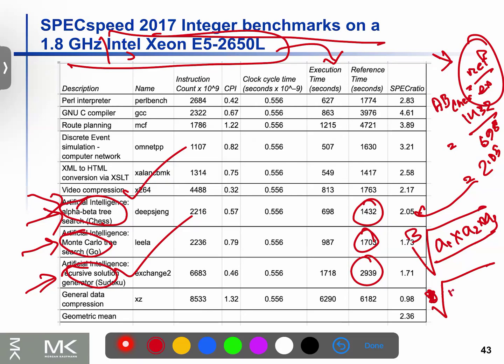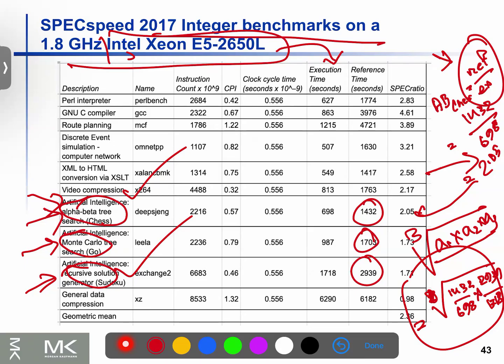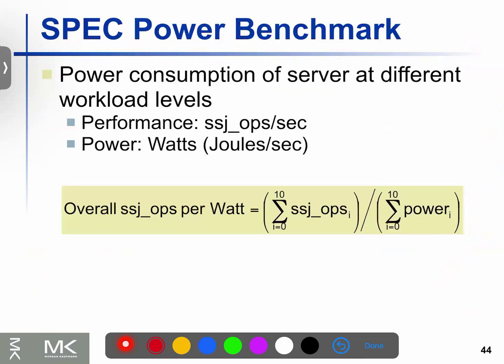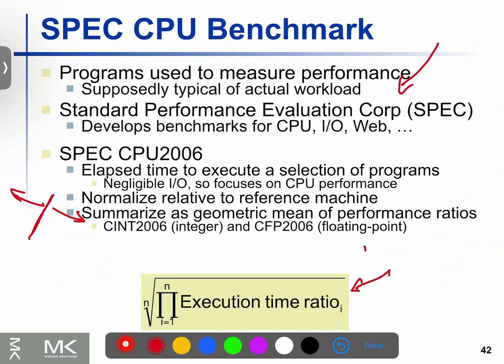The geometric mean is calculated as the n-th root of the product of all SPEC ratios. The reference time is divided by the execution time for each benchmark program. The geometric mean is the main formula for the overall SPEC benchmark score.